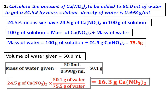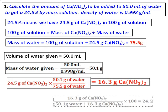The grams of water cancel and I get the amount of calcium nitrate as 16.3 grams. Just to verify: we are going to add 16.3 grams of calcium nitrate to 50.1 grams of water. 16.3 divided by (50.1 plus 16.3) gives 24.5%, and the calculation confirms the answer is correct.